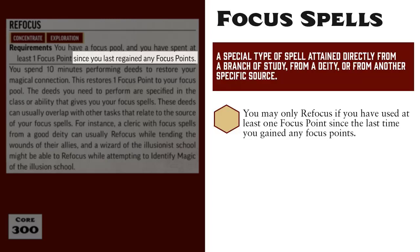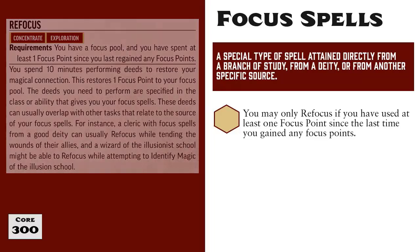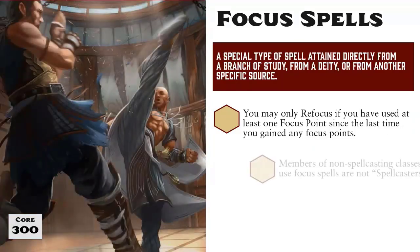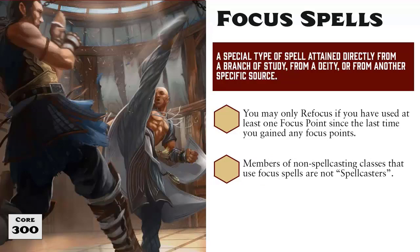Every time you spend more than one focus point in an encounter or between refocusing, it lowers the maximum number of points you can have available for the rest of the adventuring day. Also, it's worth noting that when a member of a non-spellcasting class gains focus spells — for example, monks with their Ki Strike feat — they gain the ability to use the cast a spell activity, but the ability to cast these spells does not make them a spellcaster. If you are this monk and you use focus spells, you do not qualify for feats or other rules that require you to be a spellcaster.